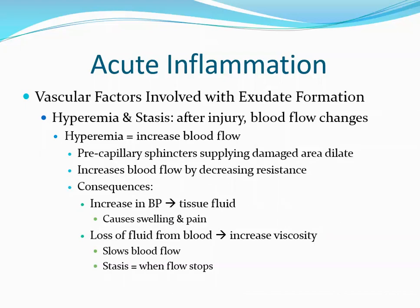Looking at the vascular factors involved with exudate formation, the first is hyperemia and stasis. Almost immediately after an injury, blood flow patterns will change. Hyperemia refers to an increase in blood flow — the pre-capillary sphincters supplying the damaged area will dilate, allowing an increase in blood flow by reducing vascular resistance. Shortly after hyperemia develops, other capillaries and venules in the area will also dilate, causing an increase in blood pressure. This forces fluid out of the vessels into the tissues, causing swelling and possibly pain due to increased pressure on nerve endings.